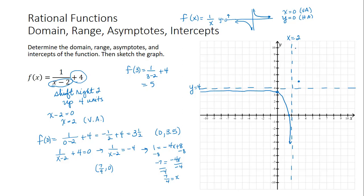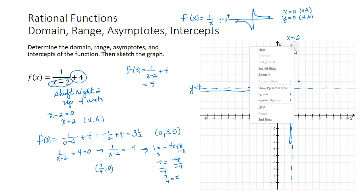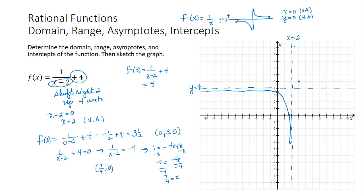And then we're going to just sketch the graph because we know it's asymptotic to this vertical line x equals 2 and to our horizontal asymptote.